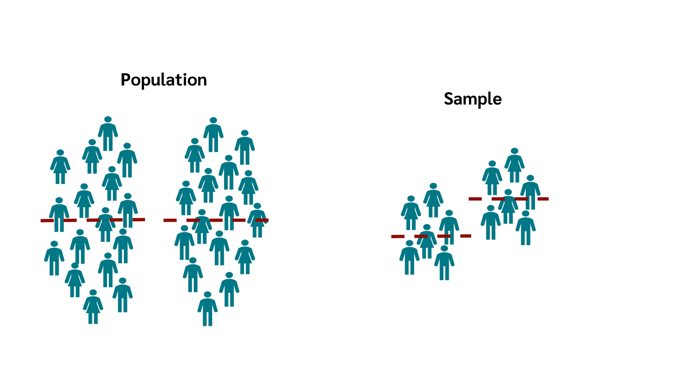Let's summarize this in three simple steps. Number one, the null hypothesis states that there is no difference in the population. Number two, the hypothesis test calculates how much the sample deviates from the null hypothesis. Number three,